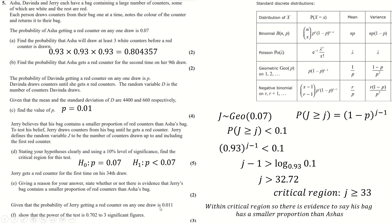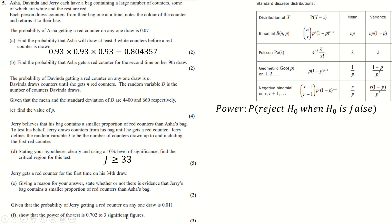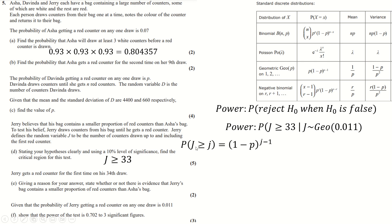The power of the test is the probability of rejecting H0 when H0 is false. To reject H0 we need J ≥ 33. But now under the true distribution (different p), the probability P(J ≥ 33) uses the same geometric formula but with the new p value. Substituting j = 33 gives the power, which rounds to 0.702 to 3 significant figures.